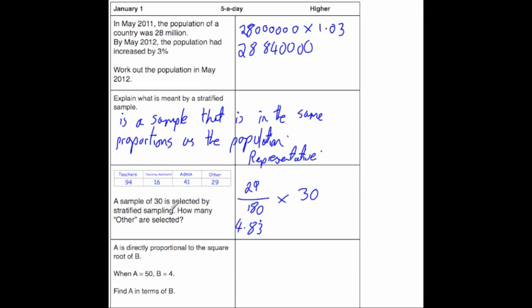Now strictly speaking, whenever you want to get a stratified sample of 30 I should do the same thing for teachers, the same thing for teaching assistants, the same thing for admin. See what the numbers are and see if I need to round up, round down and so on for each of them and make sure I get a sample size of 30.